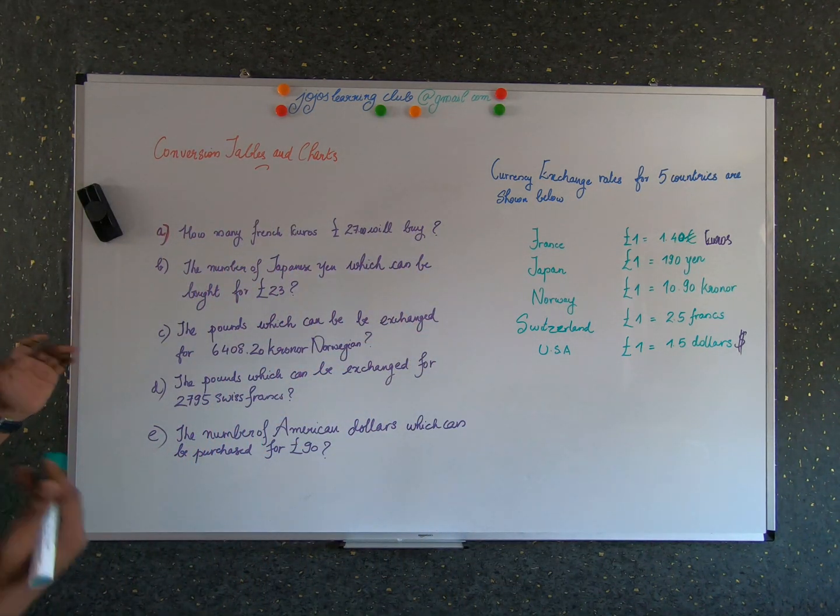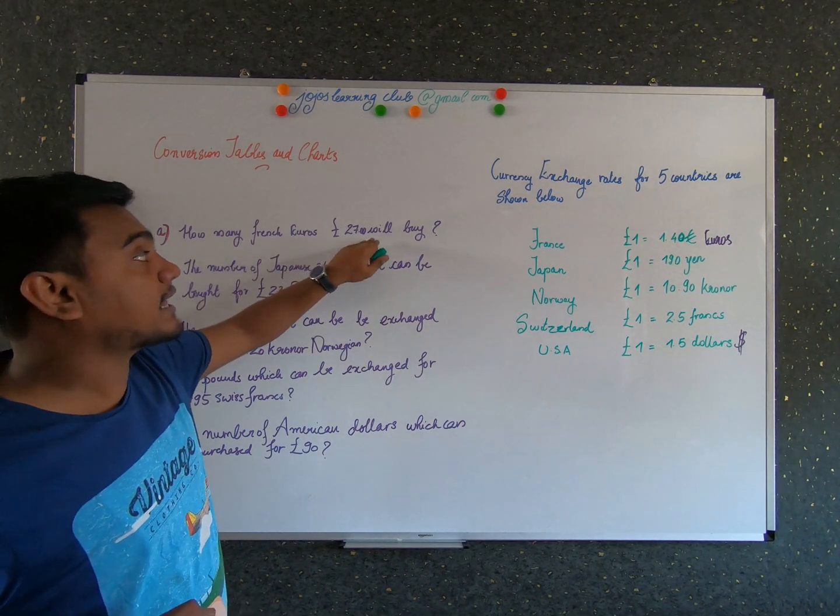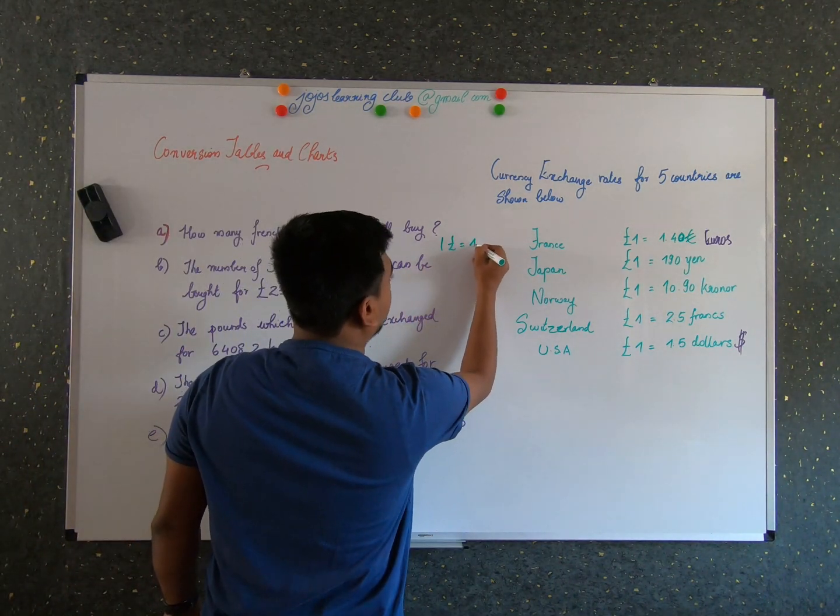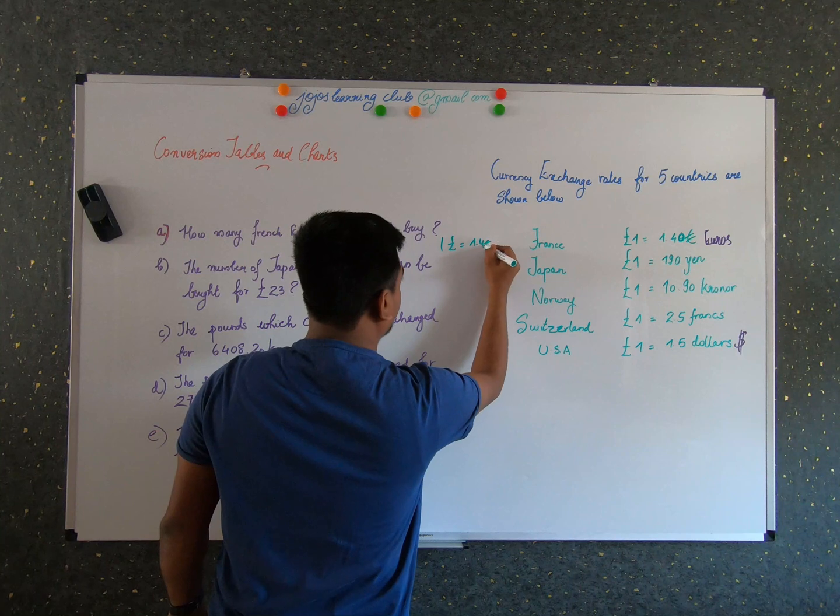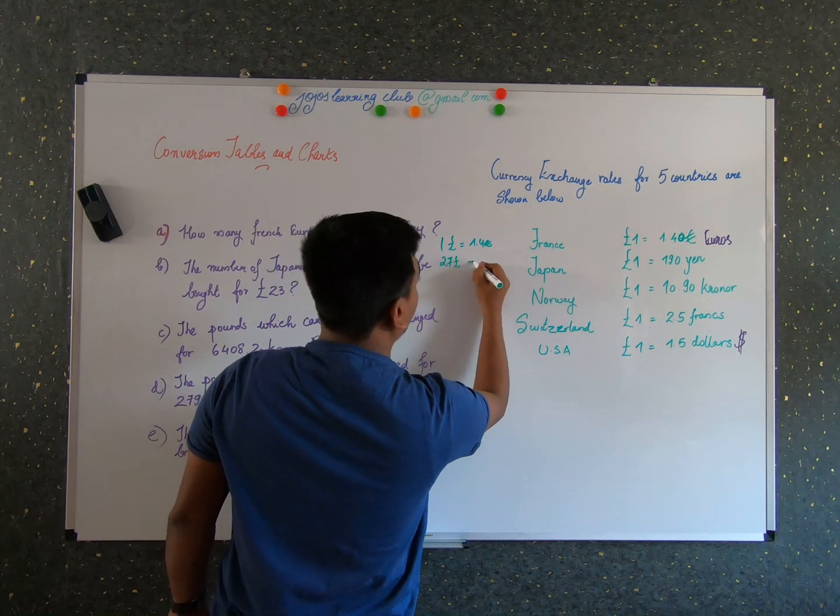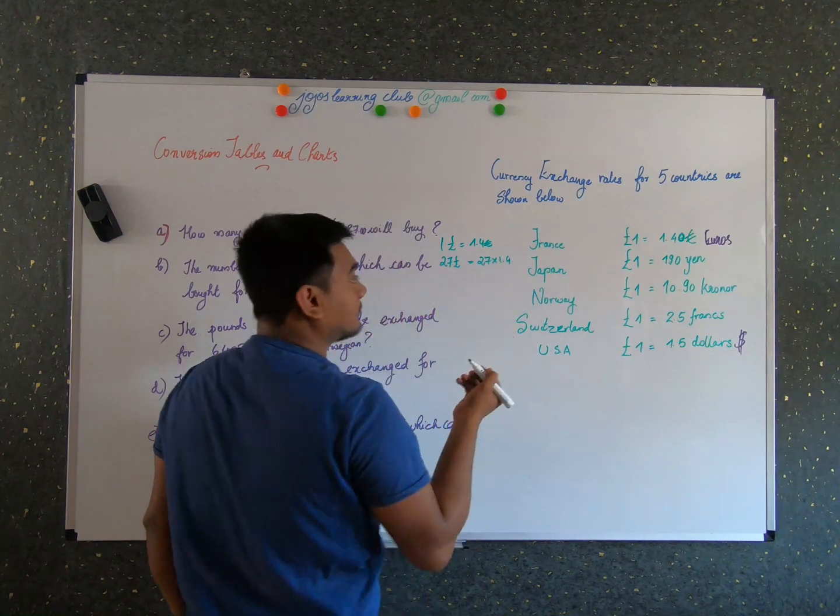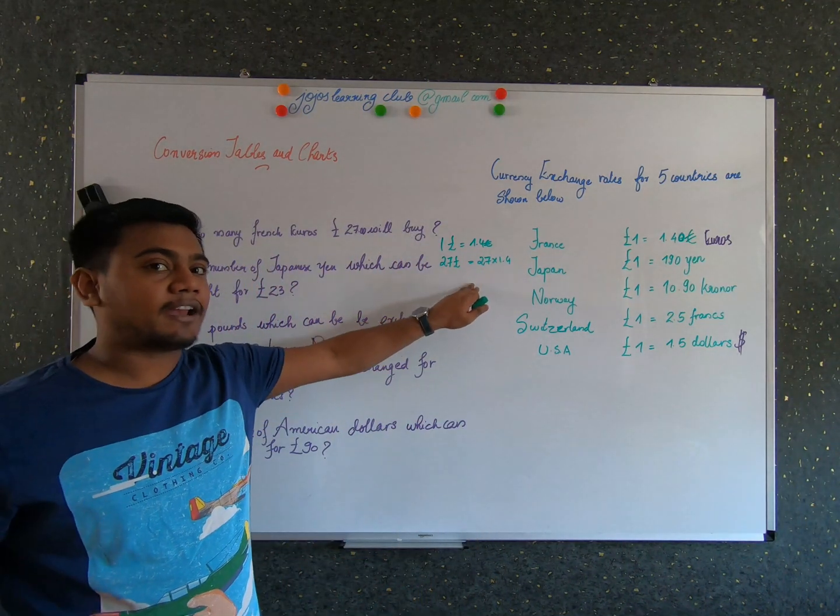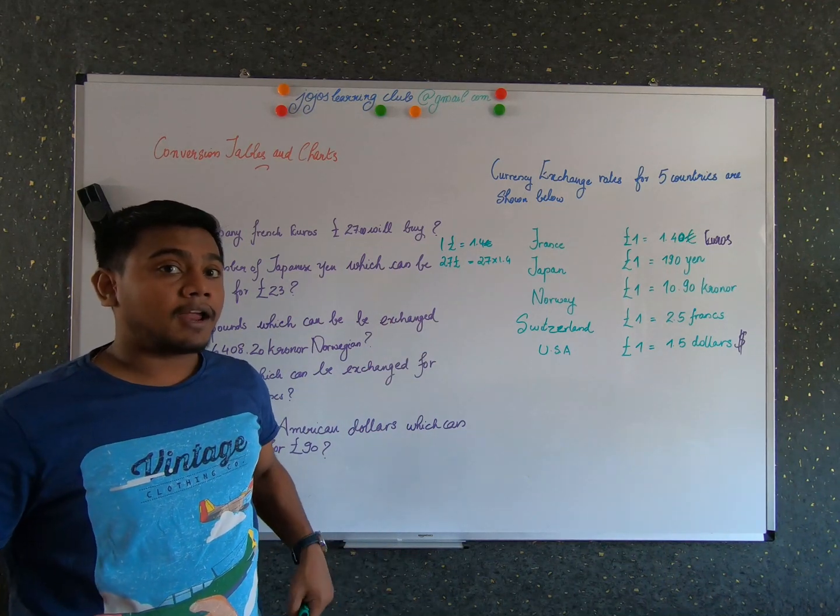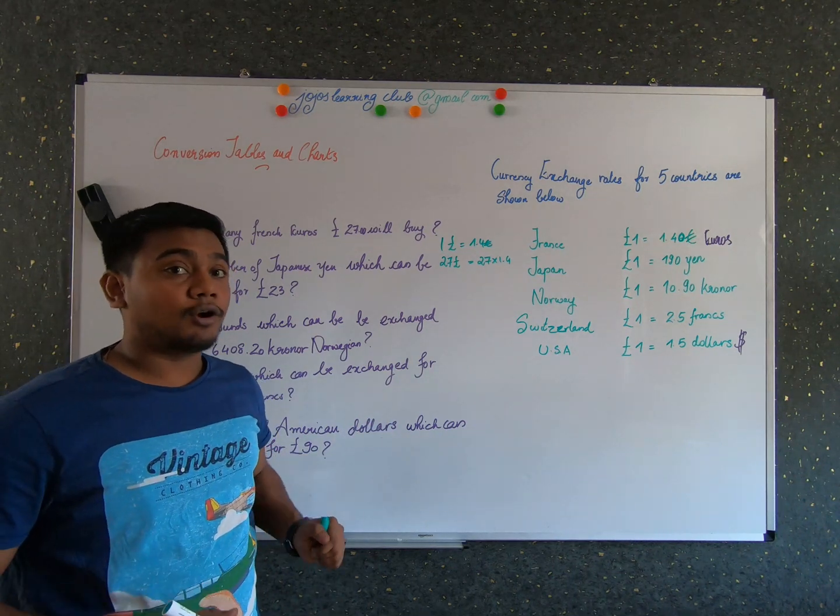And let's solve all the questions. So how many French euros 27 pounds will buy? So we know that one pound is 1.4 euros. So what would be 27 pounds? 27 into 1.4. That's it. I won't be doing the final calculations because it will take me a lot of time for the video.